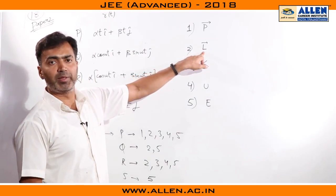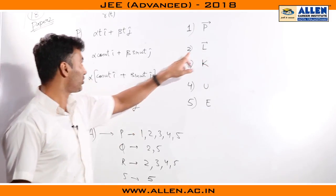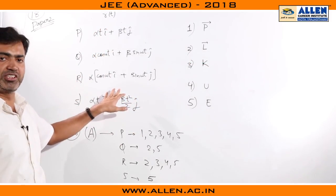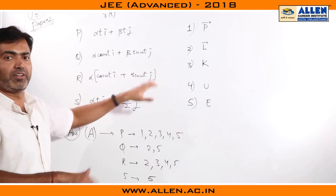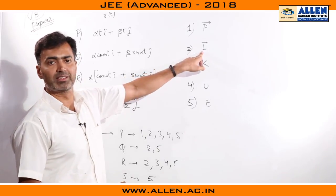To check angular momentum about origin, we could go with R cross MV. So R vectors as I mentioned differentiate get velocity, find out R cross V. If it turns out to be a constant which means angular momentum is conserved.